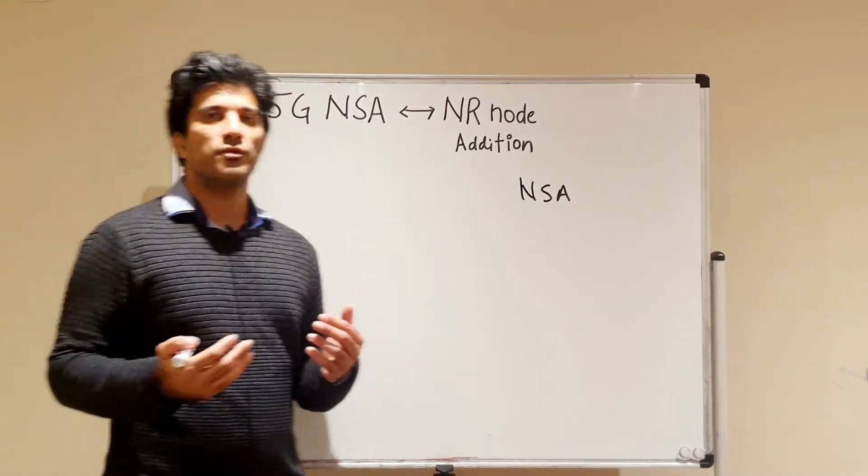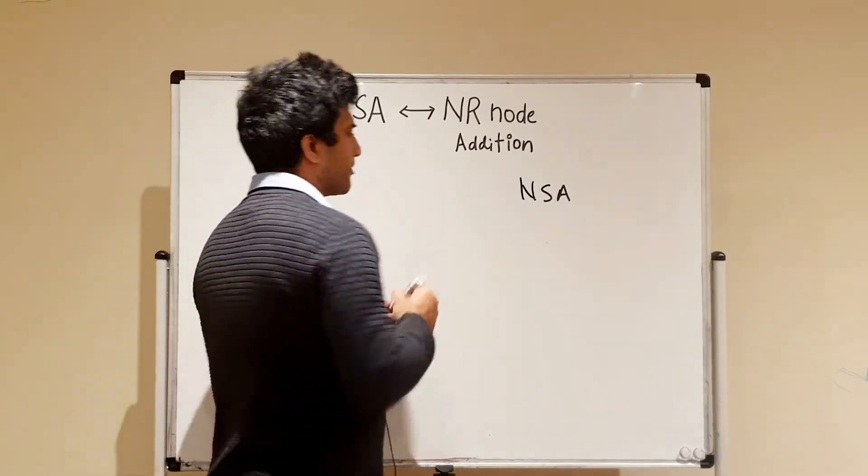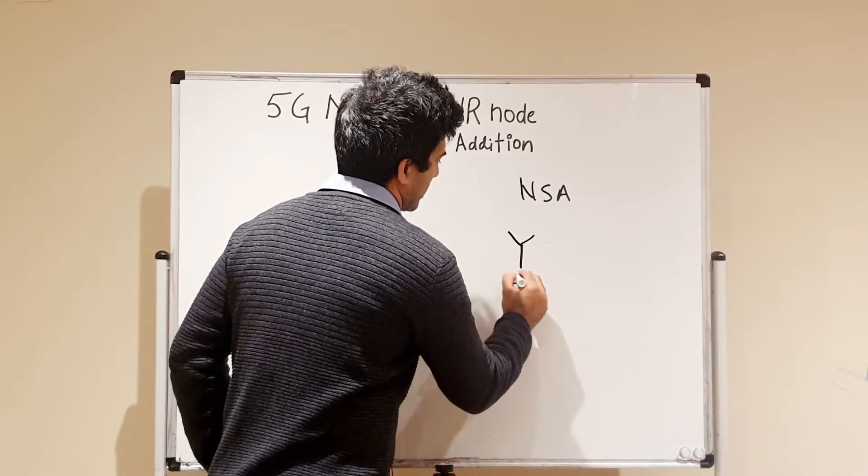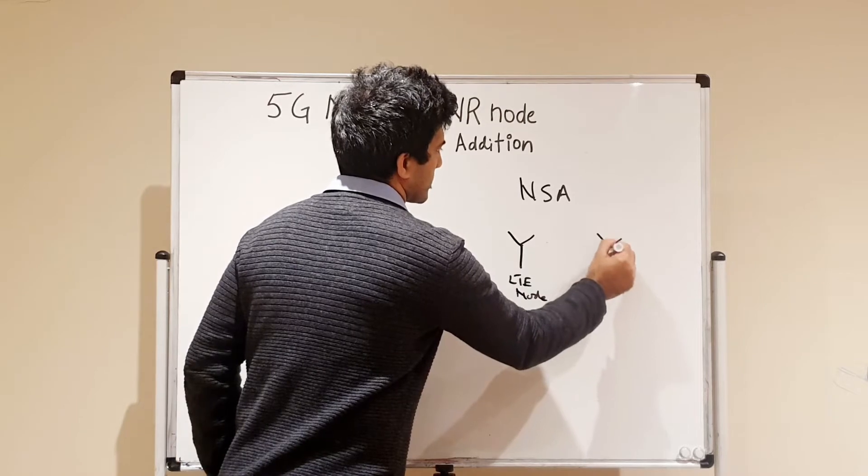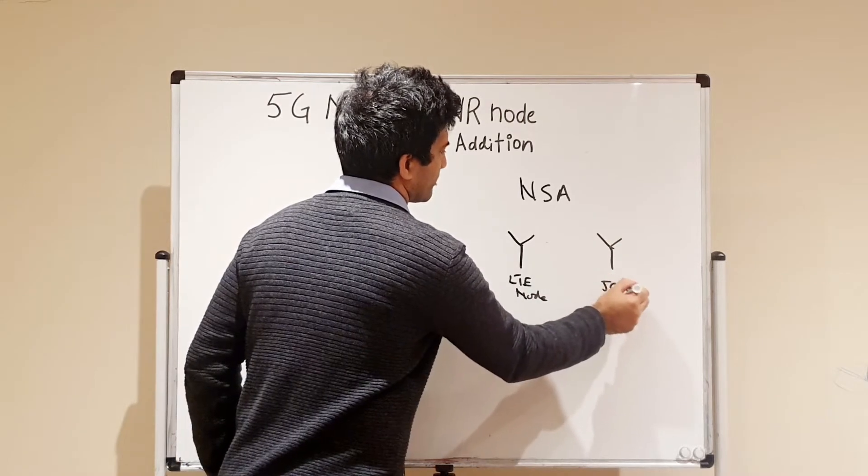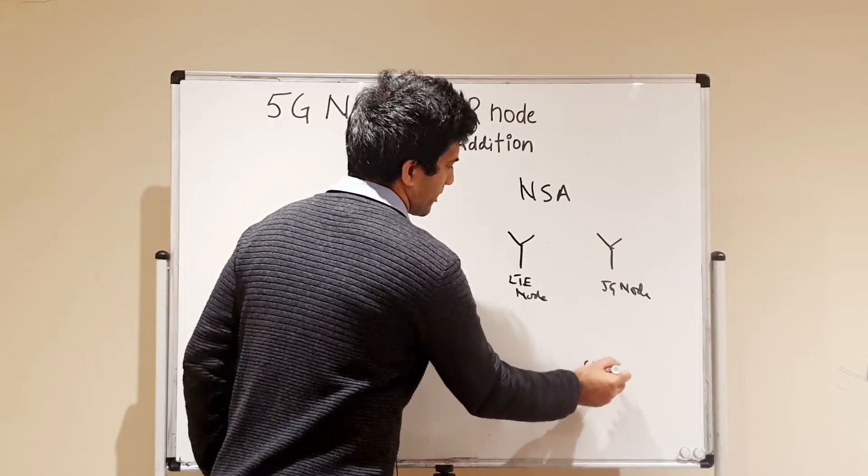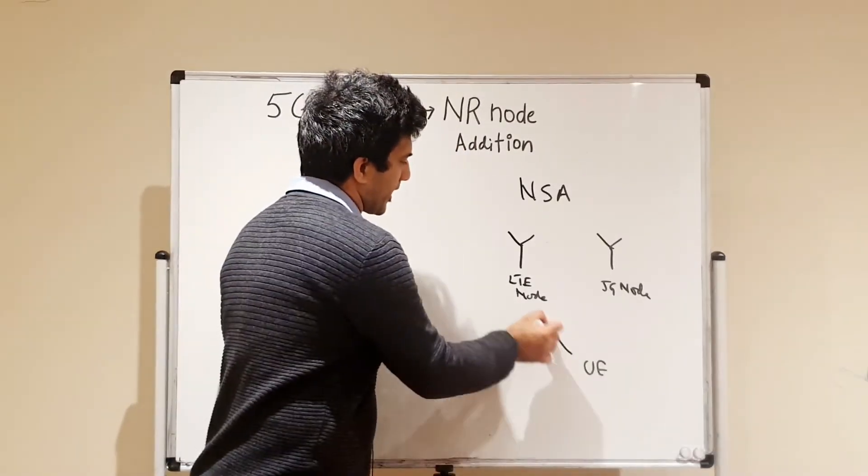To start with, NSA means that to access 5G we have to set up a master eNodeB. Basically, if this is our LTE node and this is our 5G node and this is our UE.